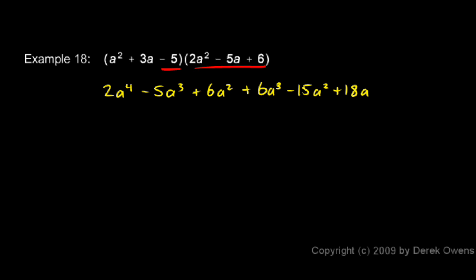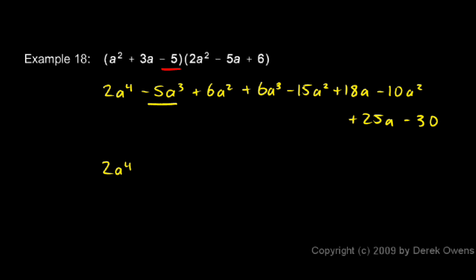Then we'll do the negative 5 times each of those three terms. Negative 5 times 2a squared is negative 10a squared. Negative 5 times negative 5a is plus 25a. And negative 5 times 6 is negative 30. So I have nine terms and I have to combine like terms. I start with the 2a to the fourth — it's the only a to the fourth term. Then I have negative 5a cubed and positive 6a cubed. Negative 5a cubed and positive 6a cubed give us positive 1a cubed, and we leave off the 1 as we write it.